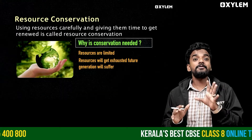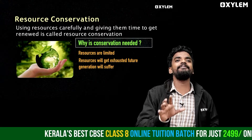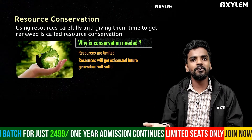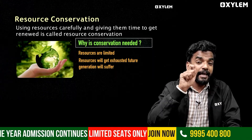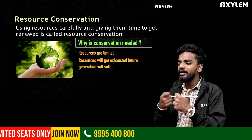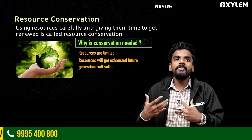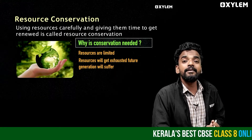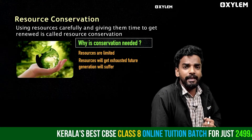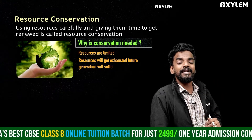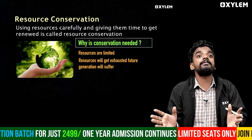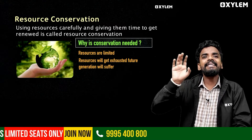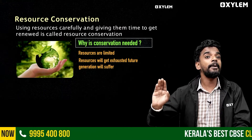Resource conservation means using resources carefully and giving them time to renew. For example, oxygen is a resource. If we pollute the air and emit carbon, we destroy the atmosphere. Using resources carefully and giving them time to get renewed is known as resource conservation. We need to recreate and replenish what we use.